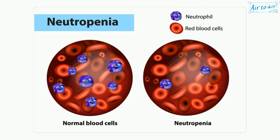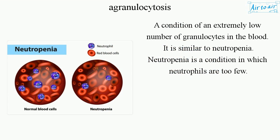Agranulocytosis is a condition of an extremely low number of granulocytes in the blood. It is similar to neutropenia, which is a condition in which neutrophils are too few.